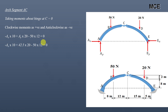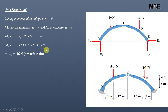Putting the value of Ay equal to 42.5 newtons: minus Ax into 10 plus 42.5 into 20 minus 50 into 12 equals zero. From this you will get the value of Ax equal to 25 newtons. Since this is positive, our assumed direction is correct — it acts towards the right.